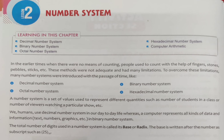We humans use the decimal number system in our daily life to count things. Whereas the computer represents all kinds of data and information — like text, numbers, and graphs — in the form of the binary number system. So, we humans use the decimal number system and computers represent all data in the binary number system.